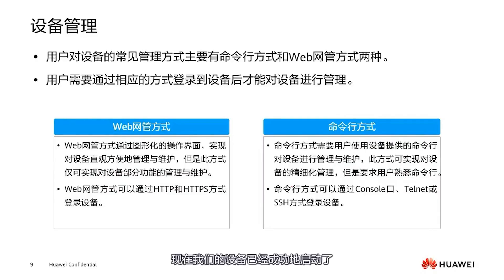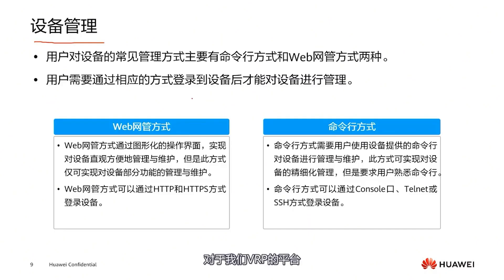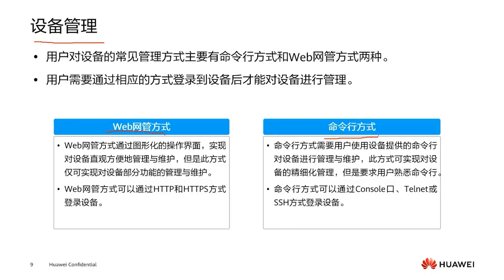Our device has successfully started up. After starting up, we can configure the device. This so-called device configuration can also be termed device management. For our VRP platform, we typically have two management methods: one is web management, the other is command line management. This web method some of you may be very familiar with if you have operated a home wireless router.